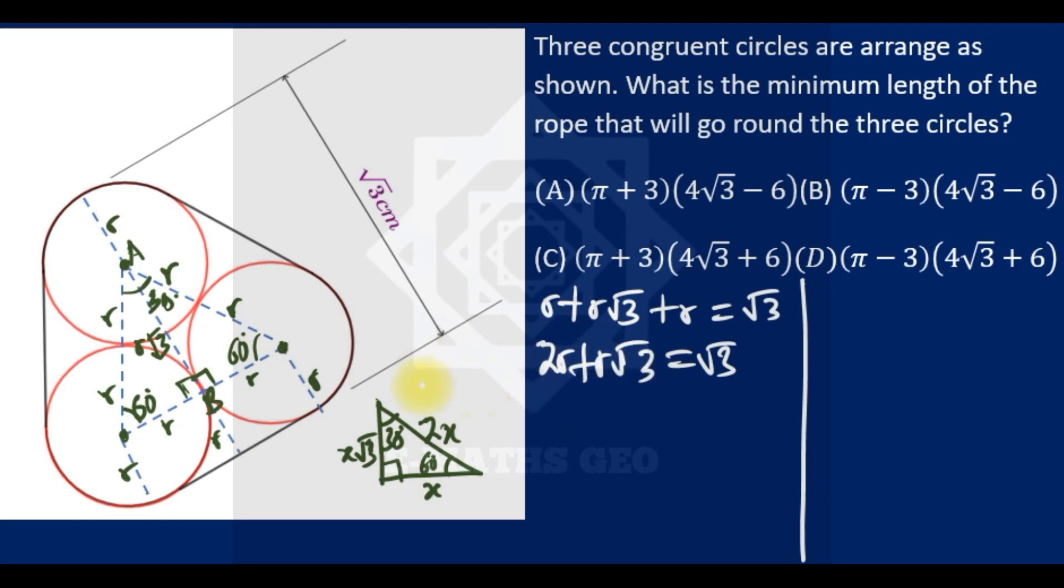As you can see, we want to get R. If you factor R, we are left with 2 plus √3. Therefore R is now √3 over (2 + √3).